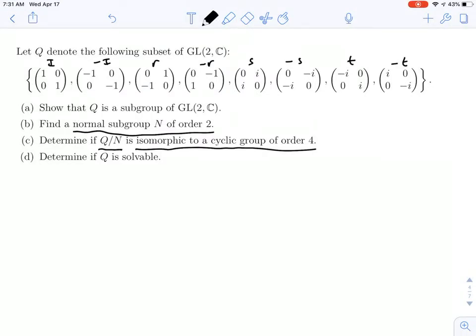Well, if it has order 2, then it's the identity element and one other element. So our N has to look like the identity and something else, and that something else has to have order 2. So there weren't so many elements of order 2 in our group. The identity has order 1. The negative of the identity, when we squared that, we got the identity. That's order 2.